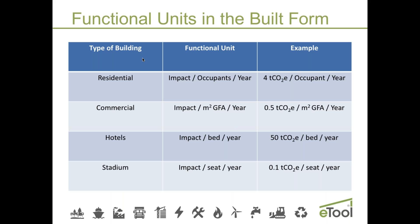We do the same approach for the built form. For a residential building, we use impact per occupant per year — about four tons of carbon is the average benchmark for the Australian dwelling. For commercial buildings, we can look at gross floor area. For hotels, impact per bed. For a stadium, impact per seat — the more people we can get into the stadium, the better the environmental performance on a per seat basis. It's very important to maximize the primary function of the projects we're working on.